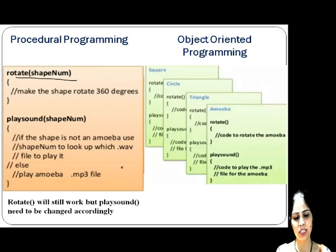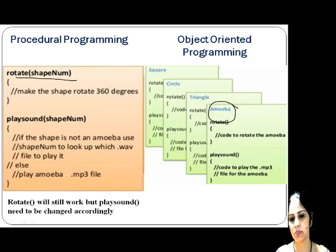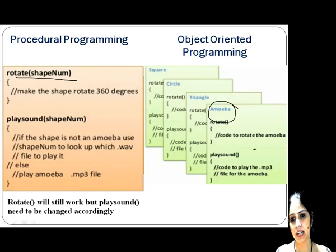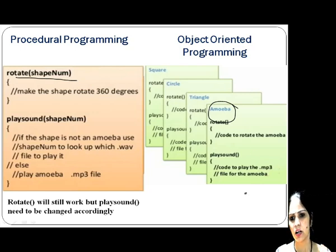Tanya already had three classes. She wrote a new class named Amoeba, and in that class the rotate function had the code to rotate the amoeba and play sound. She used the .mp3 file to be played.